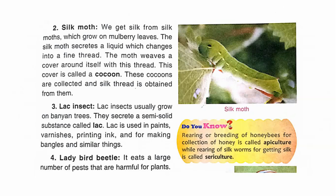The next useful insect is the ladybird beetle. Here you can see a picture of it. It eats a large number of pests that are harmful to plants. The rearing or breeding of honeybees for collecting honey is called apiculture, while the rearing of silkworms for getting silk is called sericulture. That is all for today; next class we will proceed ahead. Thank you and have a good day.